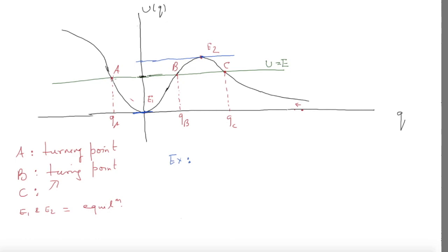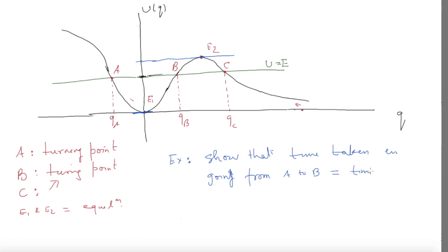I will give you an exercise. Show that the time taken in going from A to B is equal to the time taken in going from B to A. All you have to do is use the equations of motion — you do not have to solve anything. Think about why this should happen and show it explicitly from the equations.